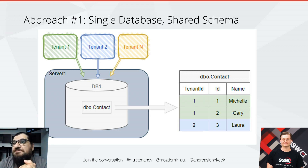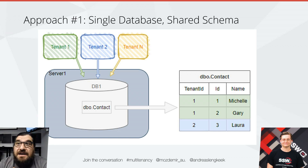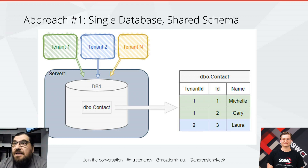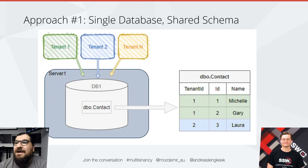In terms of pros and cons, this is very quick and easy for someone to get started or for a project to get up and running, especially if it's Greenfields. It will lower the cost of your database initially because you'd only have one database to deal with. Schema changes or version upgrades are very straightforward because you only have one lot of changes to make. But on the flip side, you now have to be really careful in your code because that underlying query that gets sent to the server — that filter better make it through every single time.